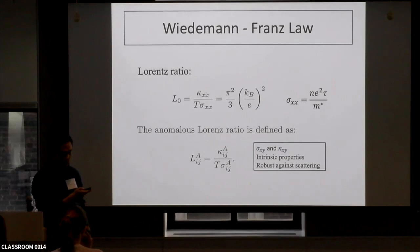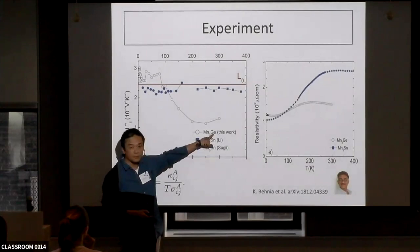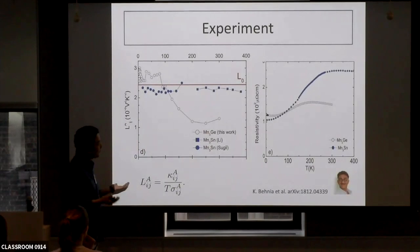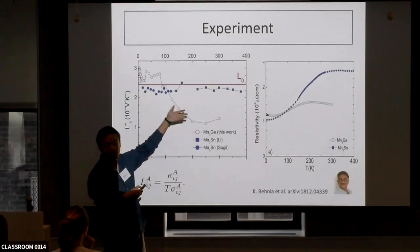Suppose we now have this anomalous Hall system and mirror the sigma_xy and kappa_xy parts. Since sigma_xy is an intrinsic property, it does not depend on scattering or tau — this part becomes really robust. If it is robust at finite temperature, naively we might believe it should remain a constant. An experiment by Kermit Benia measured these two materials — Mn3Sn and Mn3Ge. From the band structure they look almost the same and I never imagined they would make a qualitative difference. But experimentally, the Mn3Sn (T material) shows an anomalous Lorentz number that is always flat and almost constant up to room temperature, while the germanium one deviates from this constant around 100 Kelvin.